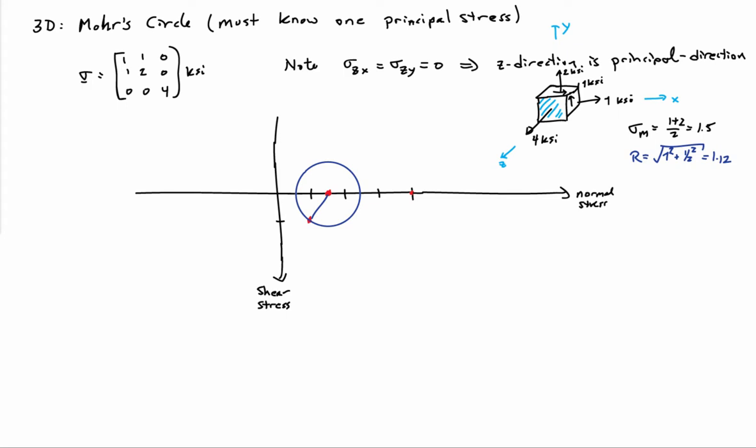This is my Mohr's Circle — conventional, other than the extra 4 KSI point. The intersections of the circle I've drawn here are two of the principal stresses. So I now have my three principal stresses: there's the 4 KSI, which I already identified a priori, and there are my two new values, sigma 2 and sigma 3, that I can read off from the diagram — 2.62 KSI and 0.48 KSI.